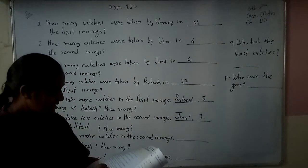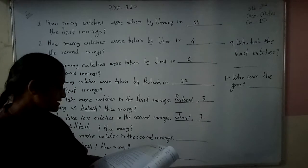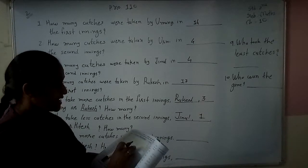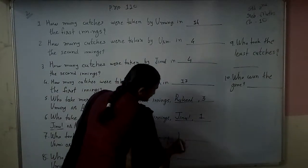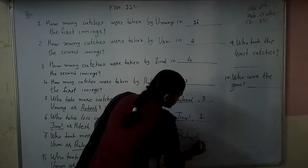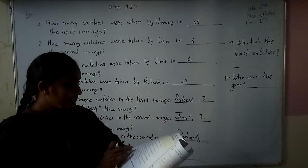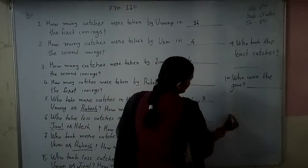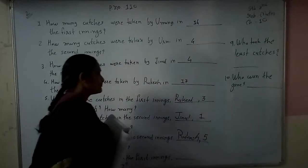Next question: Who took more catches in the second inning — Kurni or Rakesh? Kurni took 4 catches and Rakesh took 8 catches in the second inning. Comparing the two, Rakesh took more catches. The difference is 8 minus 4, which equals 4. So Rakesh took 4 more catches than Kurni, giving Rakesh 5 total catches advantage.